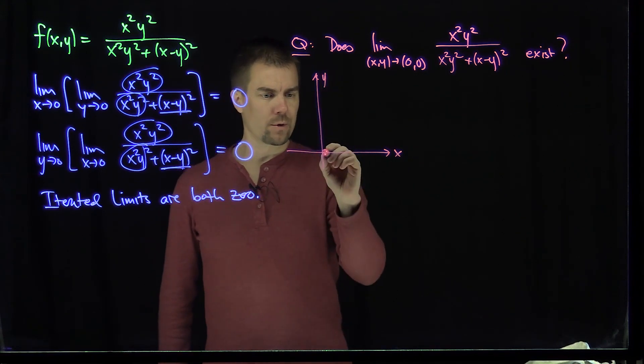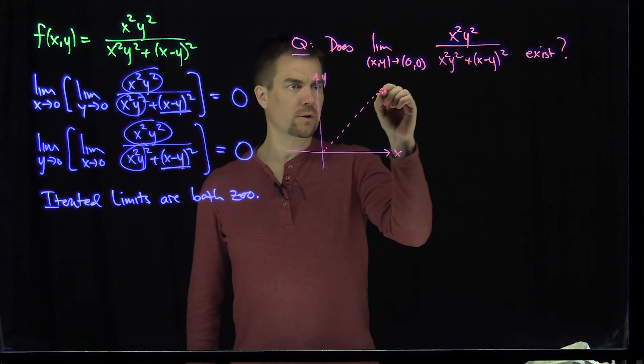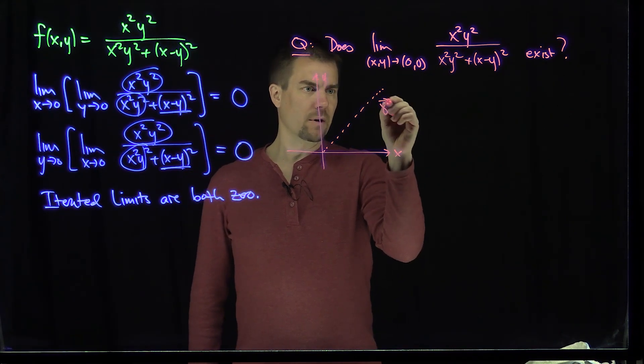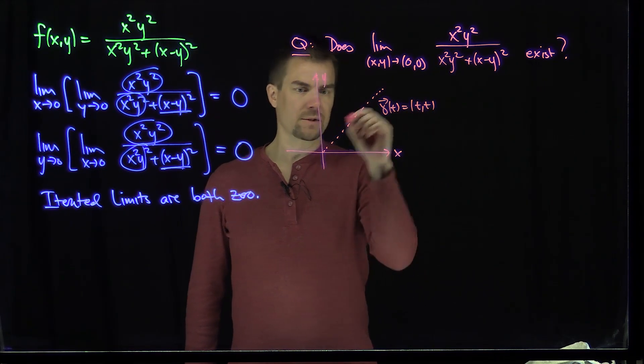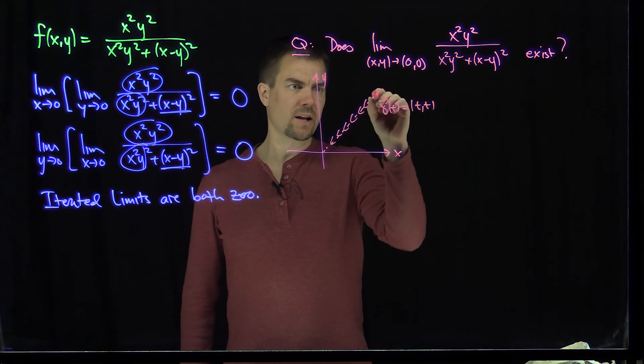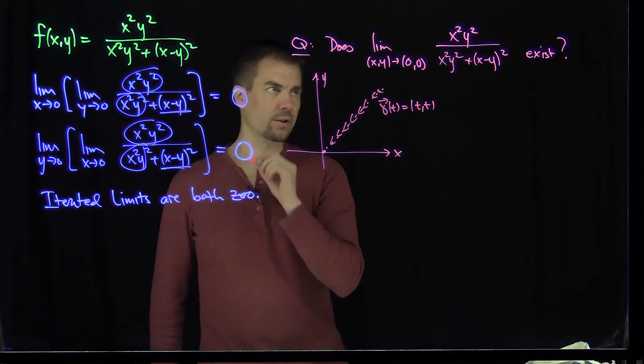and I will use this parameter curve over here. And this curve over here is going to be gamma of t, which will just be t comma t, and I will let t tend to zero, so my point will tend to the origin.